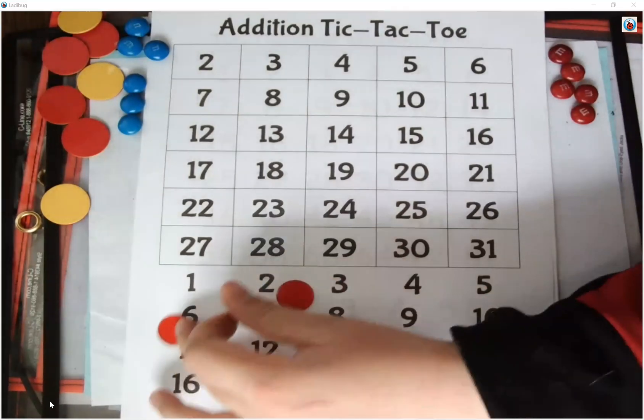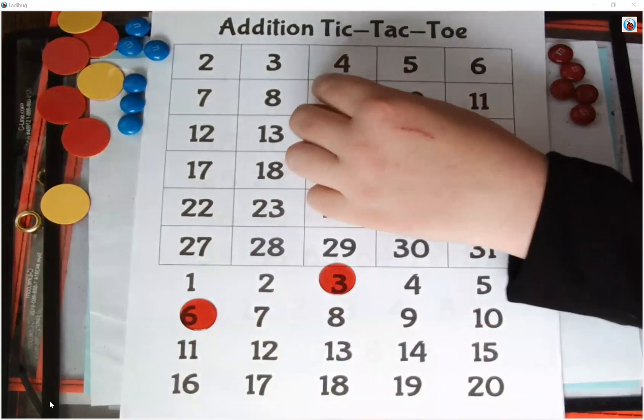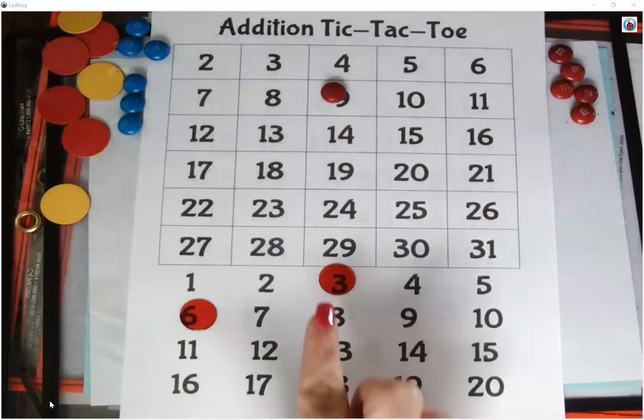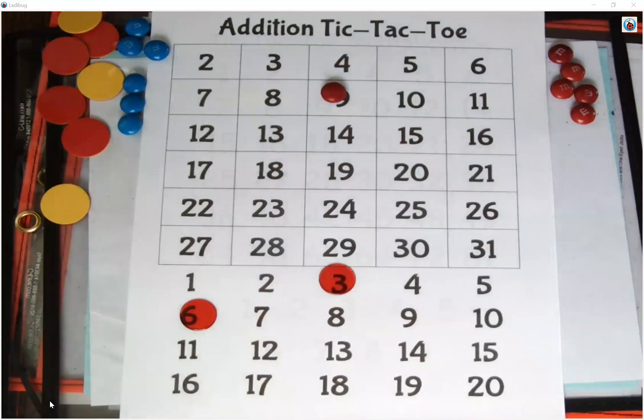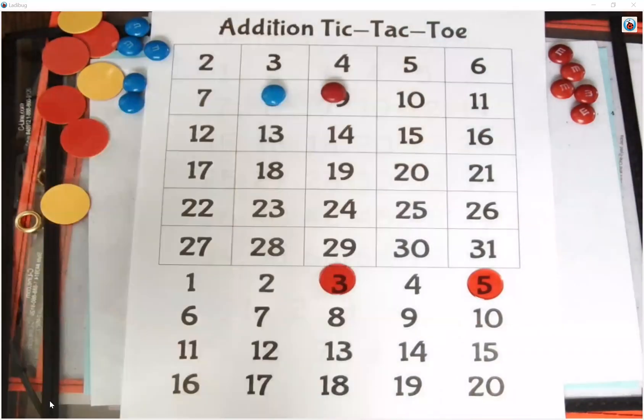Three plus six equals nine. So he covered over the three and the six. He's putting his M&M over top of nine. I now can only move one of those two counters to put my chip on the board. So let's see, I'm going to do three plus five equals eight, and mine's going to cover over the eight.